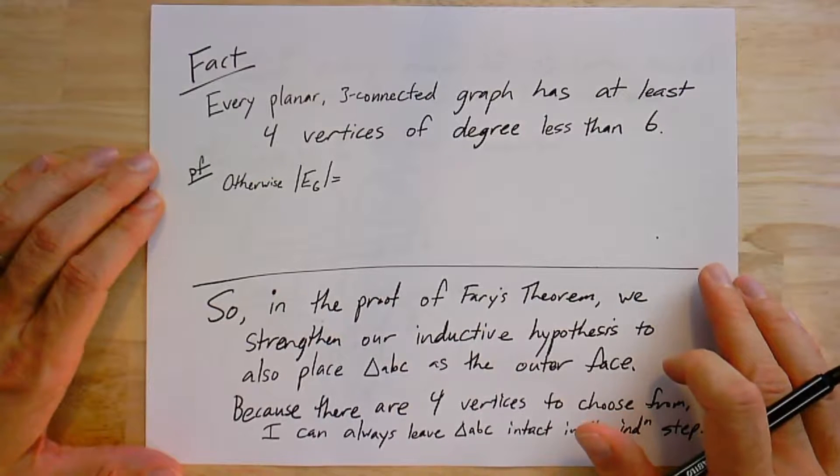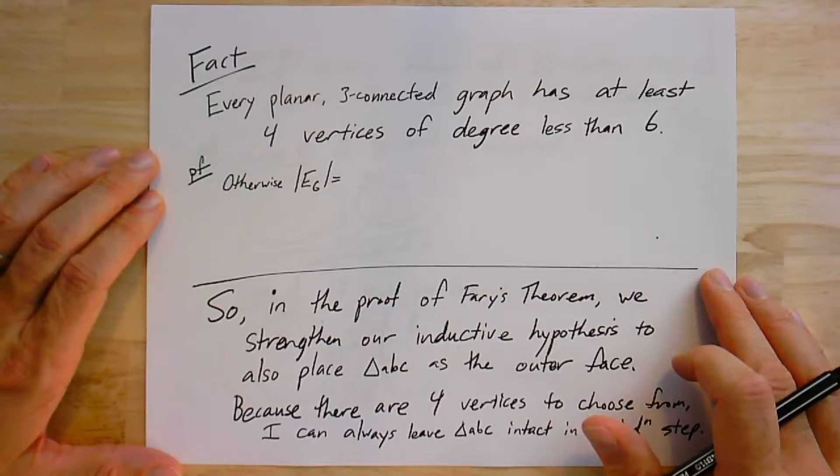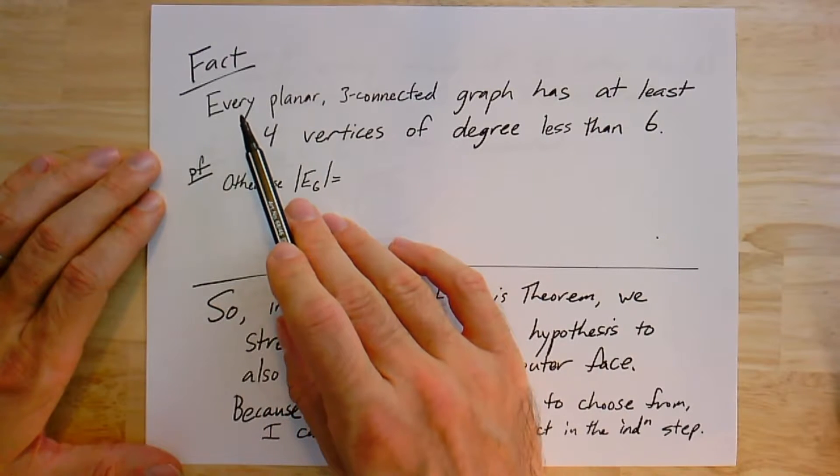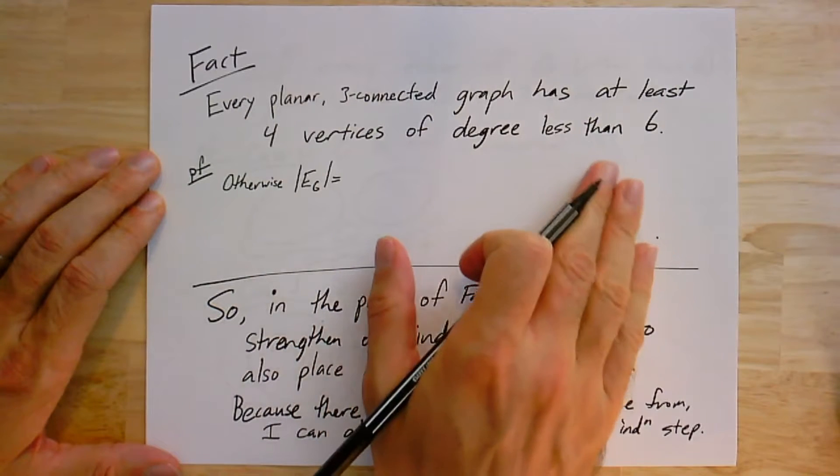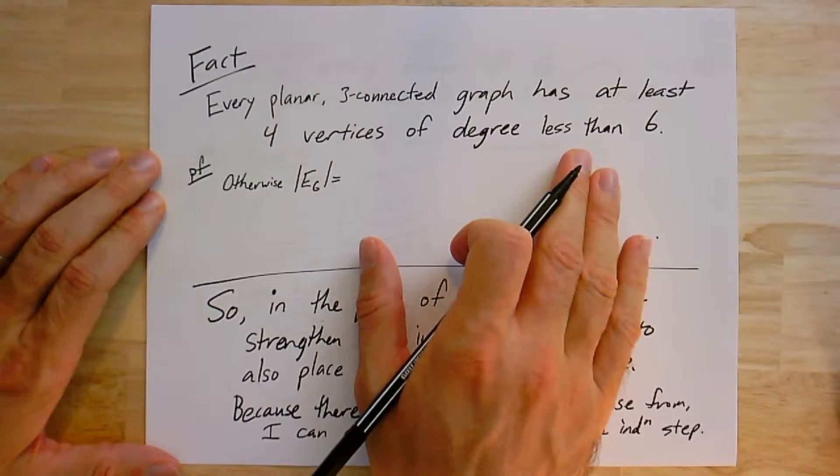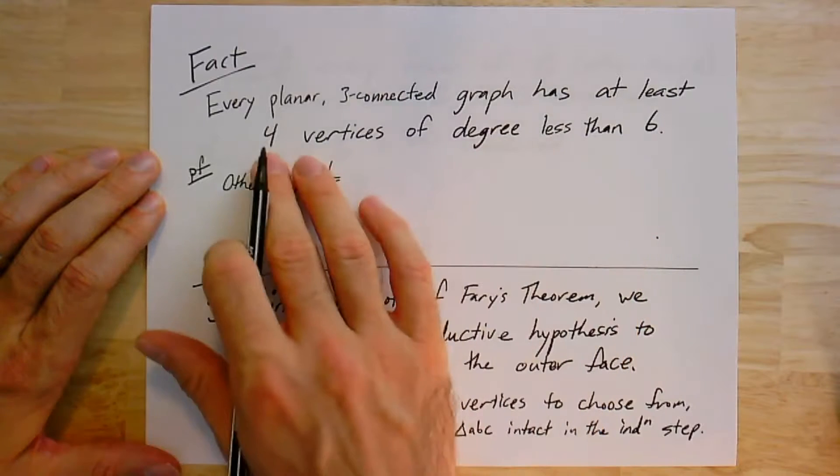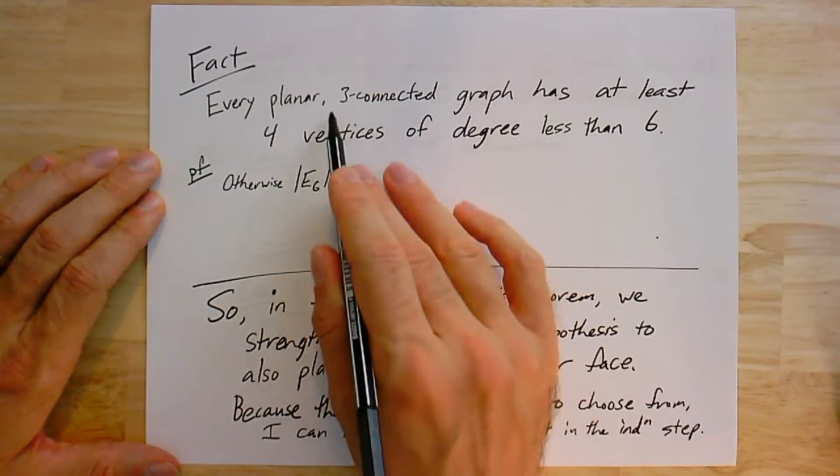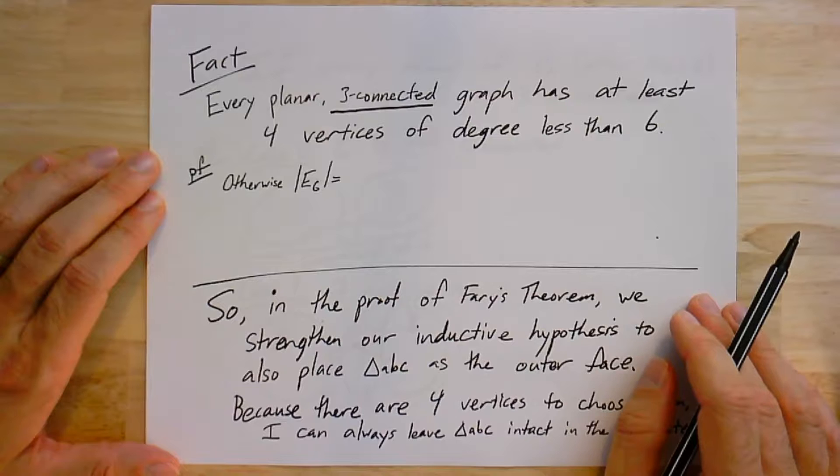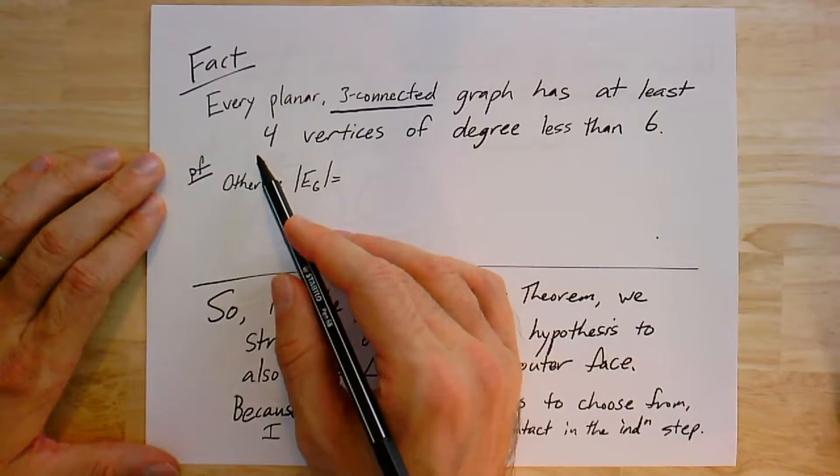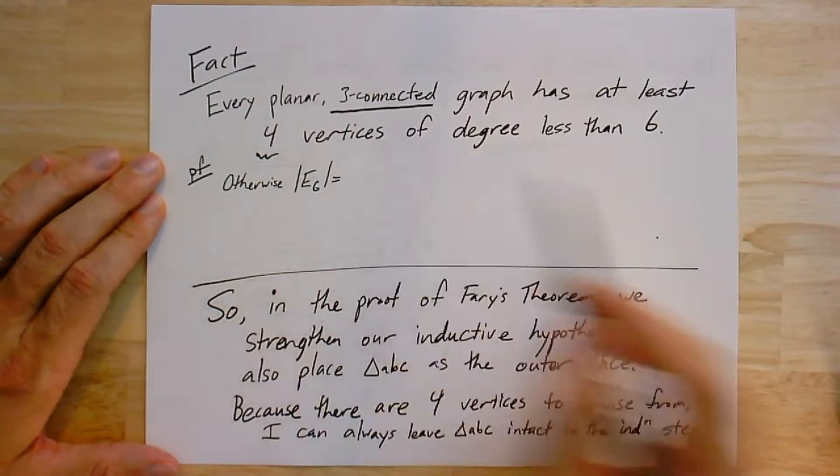How are we going to prove this? First we're going to use a nice little fact which is stronger than the fact we used when we proved Fary's theorem the first time. If you recall, the inductive proof of Fary's theorem showed that we could always remove a vertex of degree less than 6, do the embedding of the rest of the graph by induction, and then add that vertex back in. In fact, there were four vertices of degree less than 6.